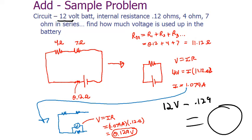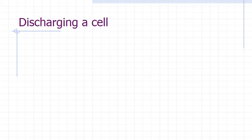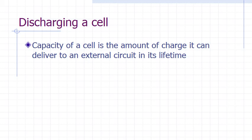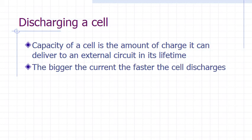When we discharge a cell, the capacity of the cell is the amount of charge it can deliver to an external circuit in its lifetime. The bigger the current, the faster the cell discharges. That should make sense because you're only going to have a limited amount within a particular cell based on its construction.